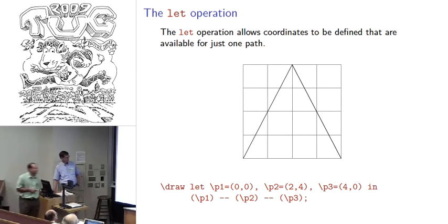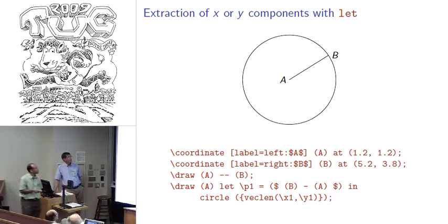We also have a path operation called let. What let allows us to do is to define a coordinate that's used essentially for just one path. It's kind of a temporary coordinate. We're going to draw on this path where we let P1 be this point, P2 be this point, P3, and so on. The P's in this case are actually required. The naming strategy 1, 2, and 3, we could actually use anything there. But the macro that we use to define these points has to begin with a P. Then we can use them just as we would as a coordinate.